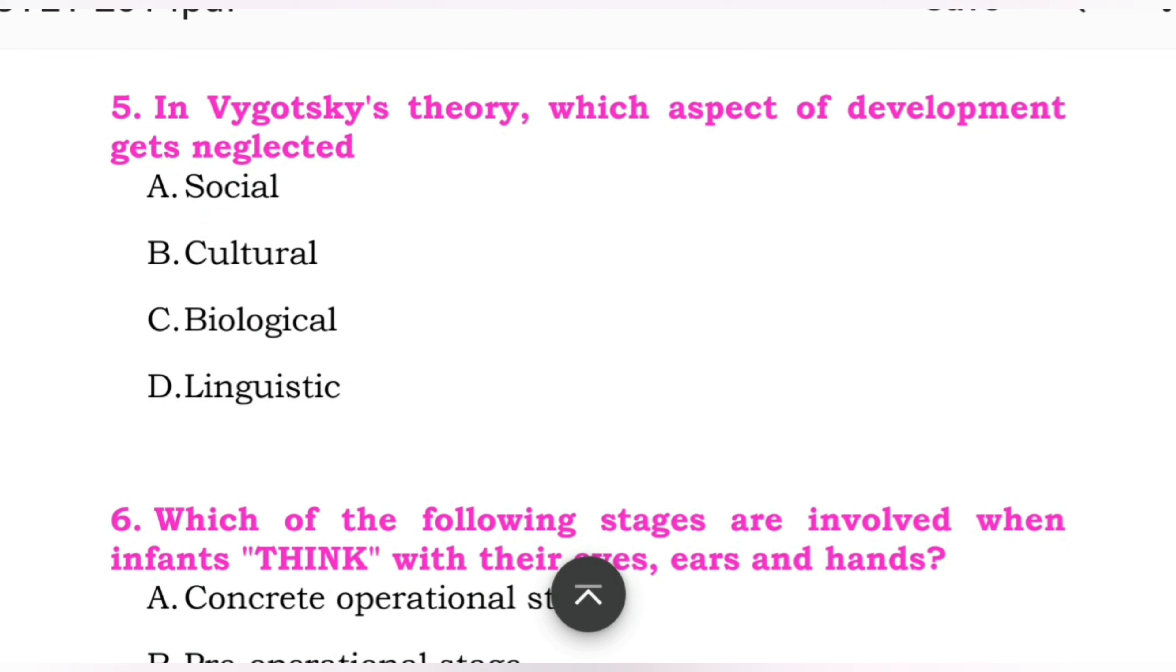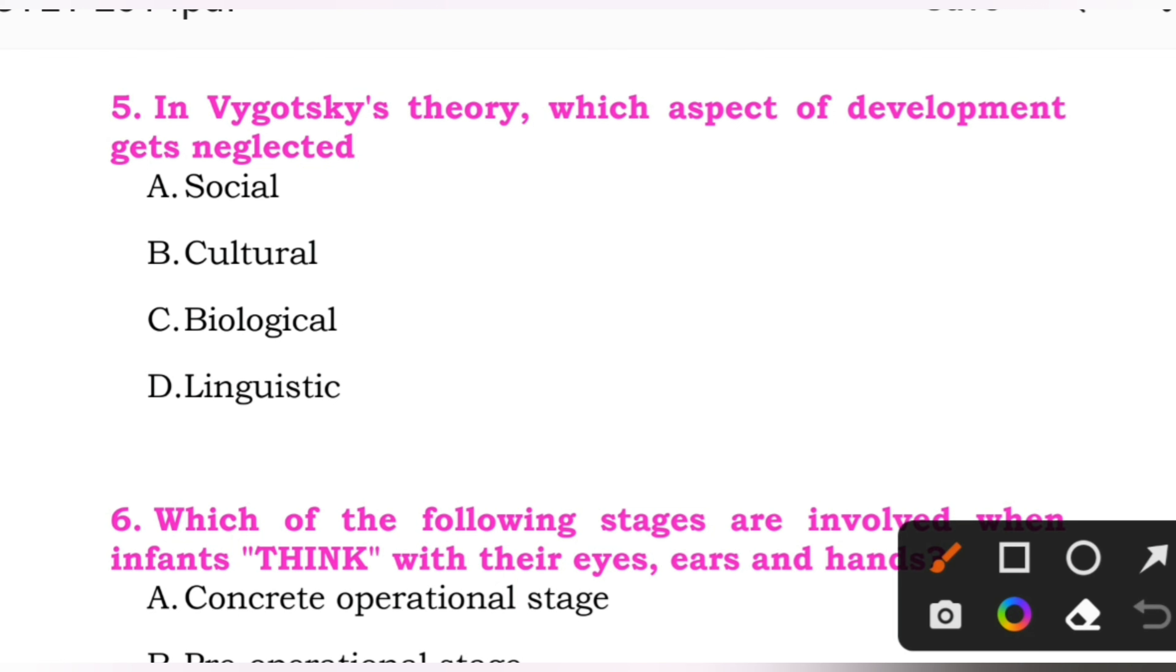Question number five: In Vygotsky's theory, which aspect of development gets neglected? Options: A: social. B: cultural. C: biological. D: linguistic. So here the right answer is C, biological.